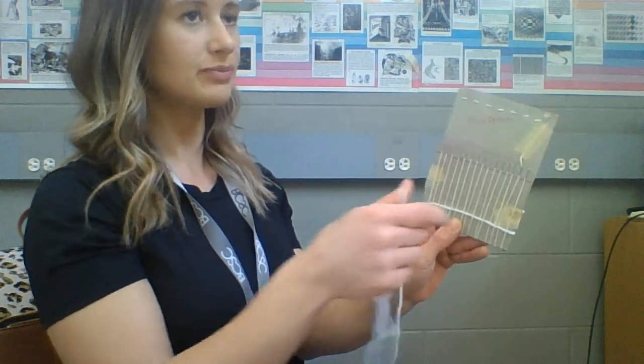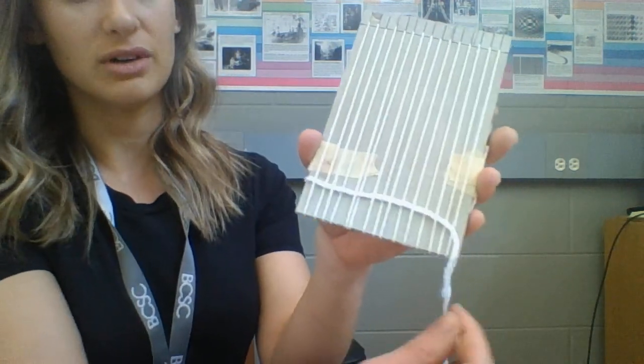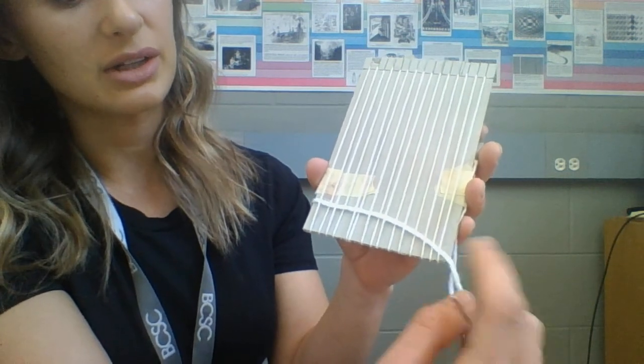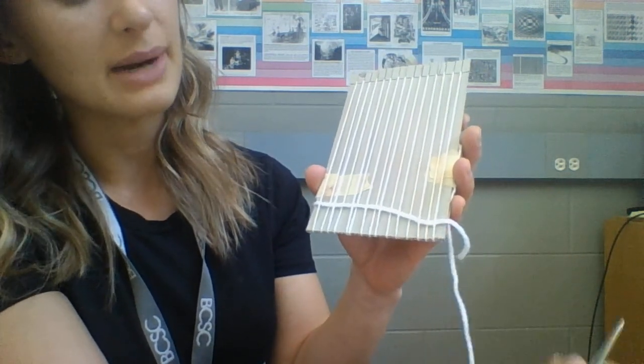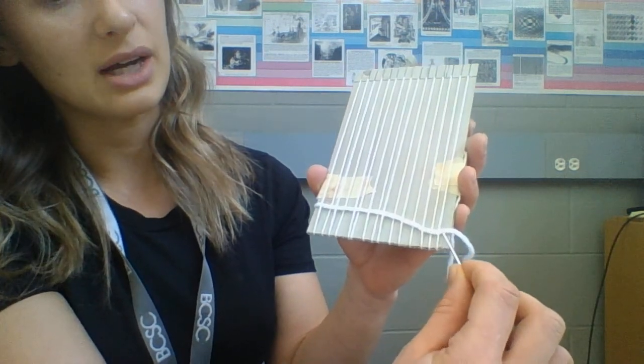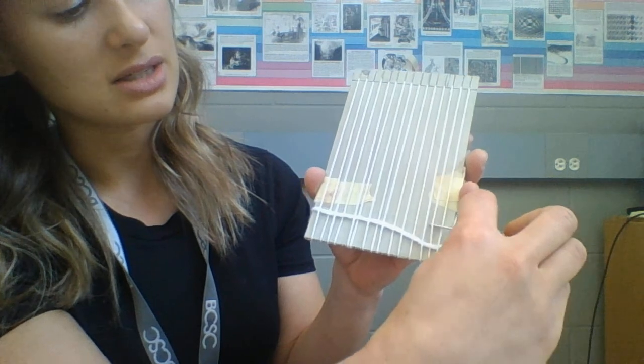So again when I get to the edge I'm gonna flip it, hug the edge. This time we have to be careful and pay attention that we're doing the alternate of our previous row. So I'm not worried about the back, I'm looking at this one right here, and because it is under, my second row needs to go over.